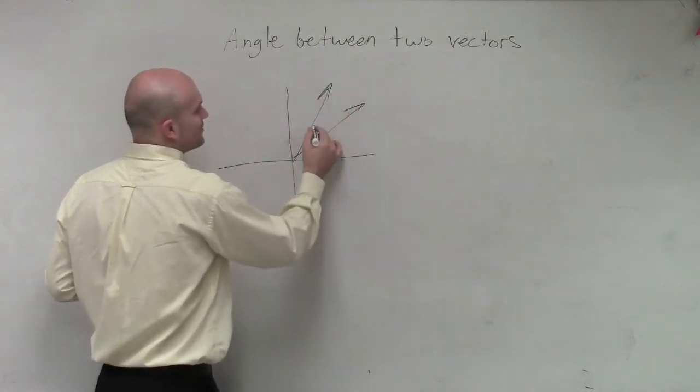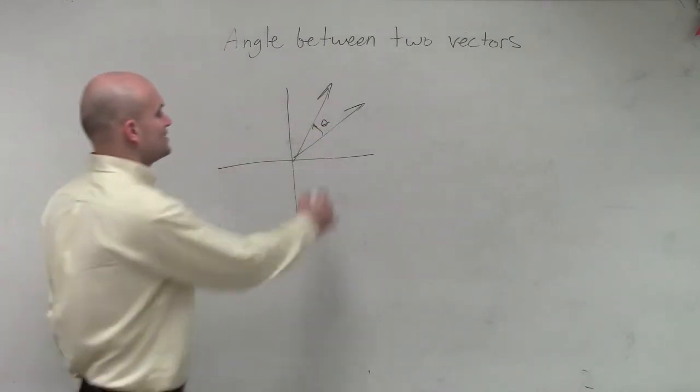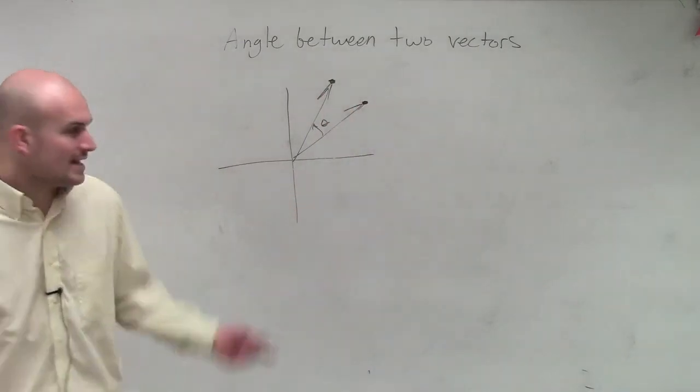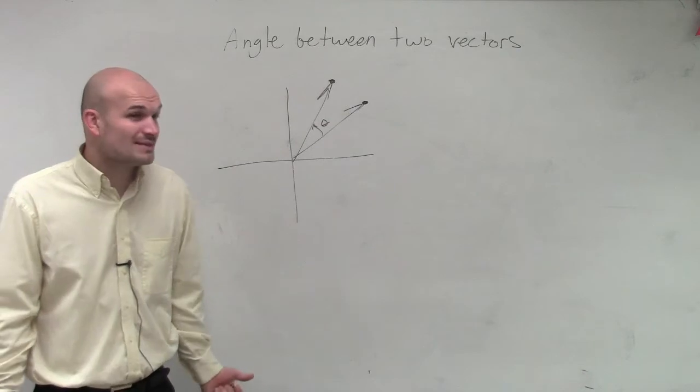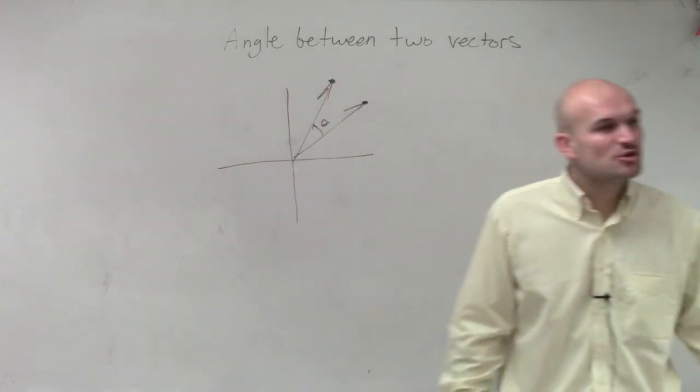Let's say I have my two vectors, and I want to figure out the angle between them. They're two vectors in component form, but I want to figure out what is that angle. We've talked about how to find the angle of just one vector, but how do you find the angle between two vectors?